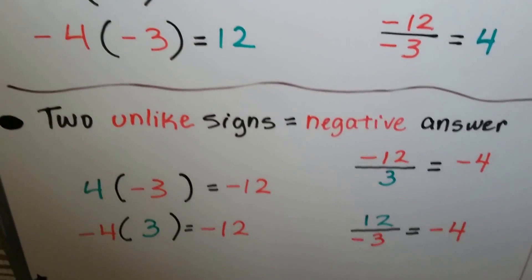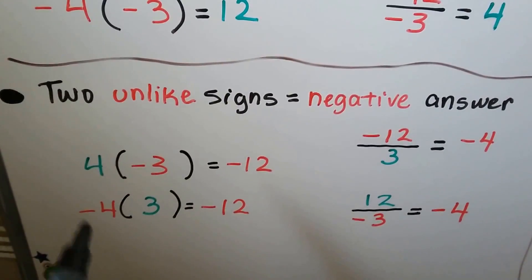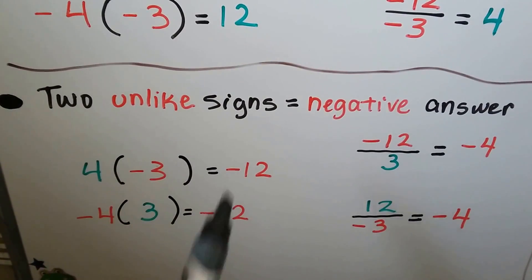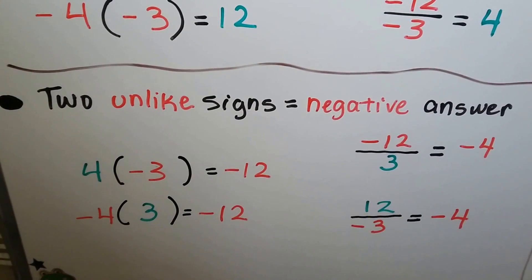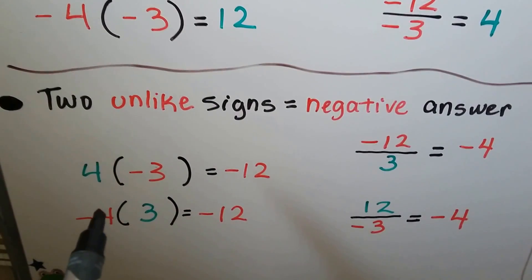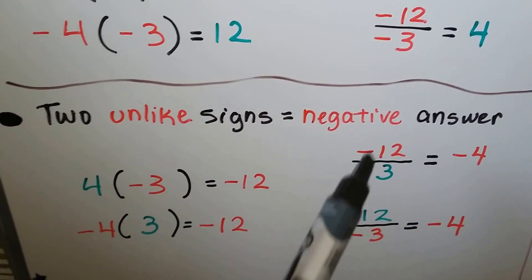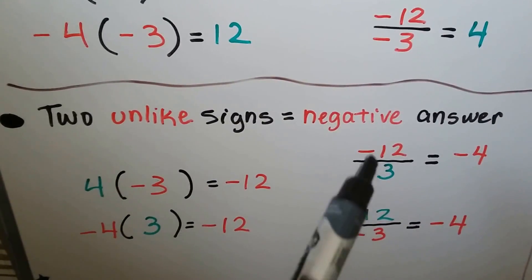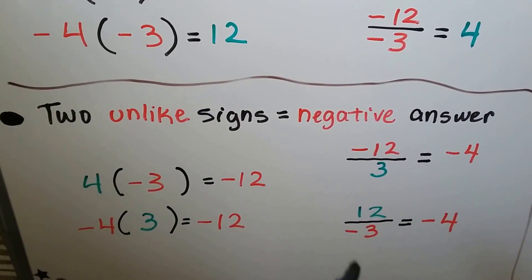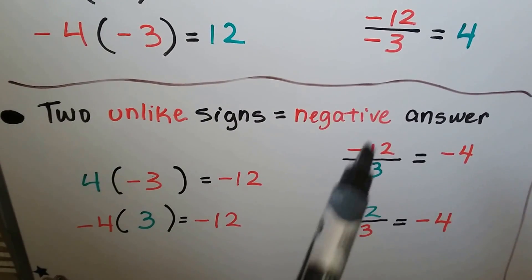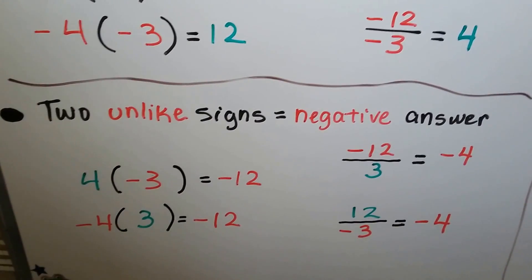When we have two unlike signs, we're going to have a negative answer. Now we have a positive and a negative — they're unlike, so it's going to be a negative answer. For multiplication, a negative and a positive is still going to be negative because we have unlike signs. When we're doing division and they're unlike signs, we're going to have a negative. It doesn't matter which one is the numerator and which is the denominator. If one of them is negative, they're unlike and the answer is going to be negative.